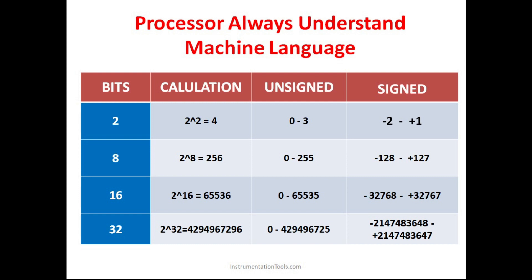In case of signed integers, there is a sign present before the value. For example, minus 2 has a negative sign, and plus 1 has a positive sign — both are signed integers. Any value such as plus 4 that has a sign is a signed integer.